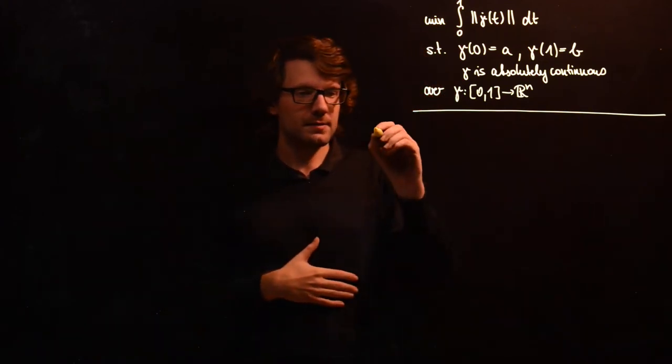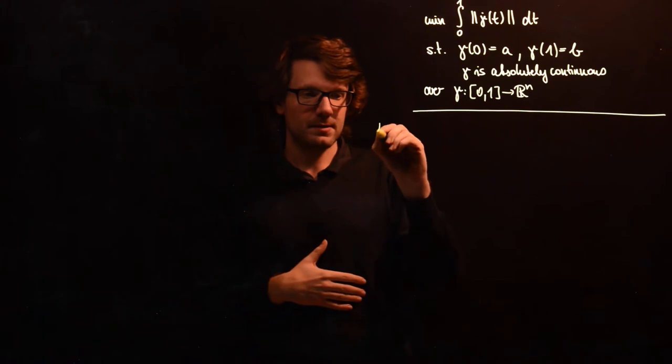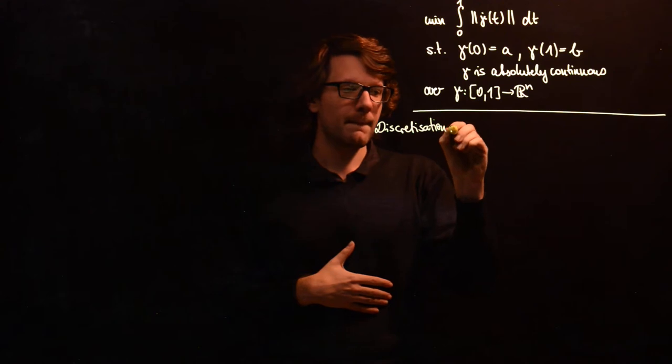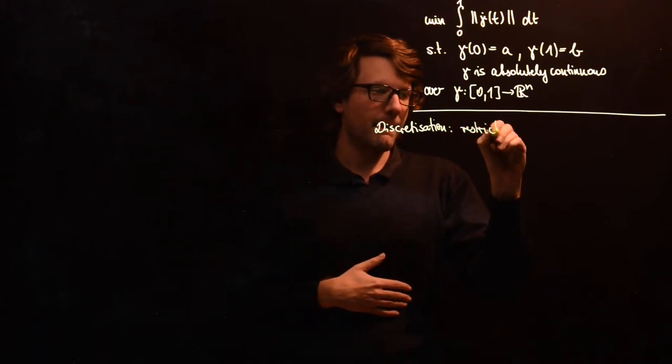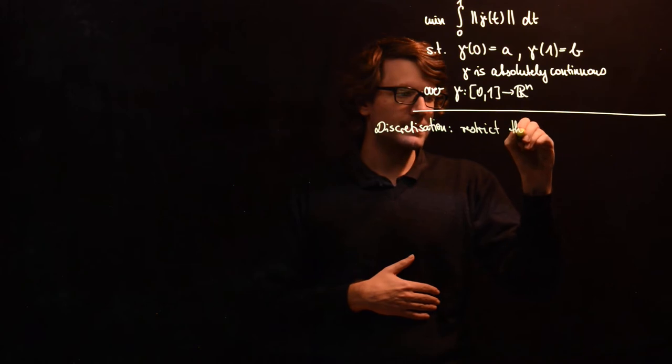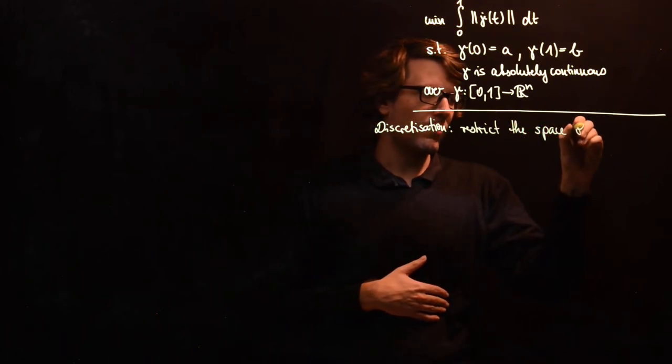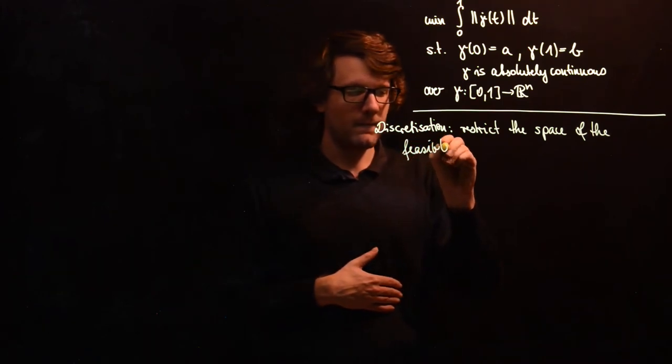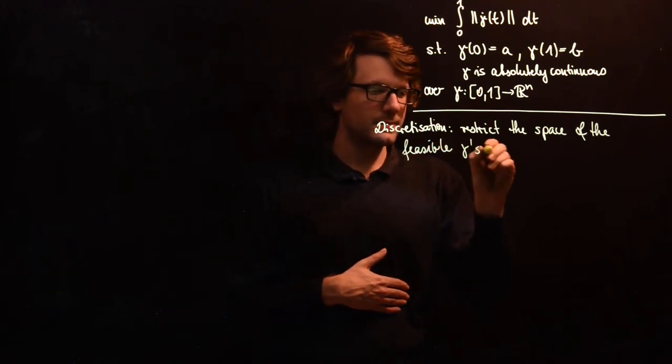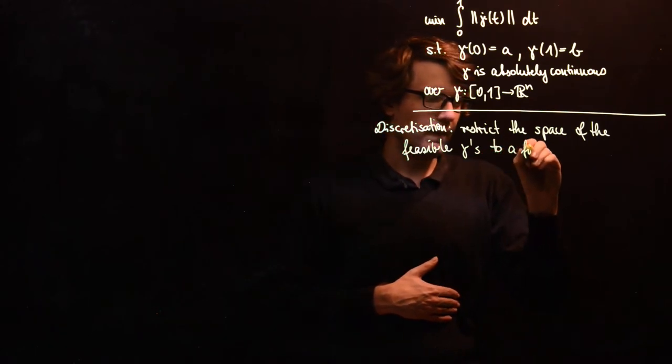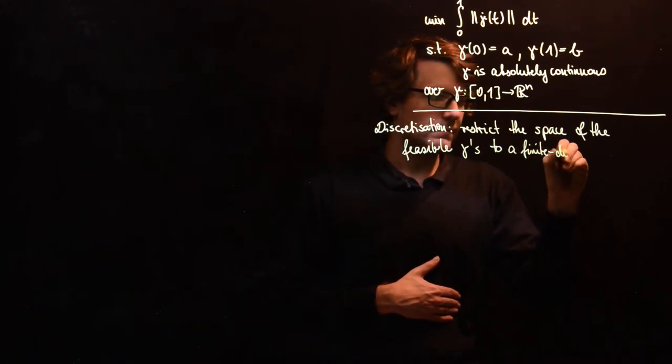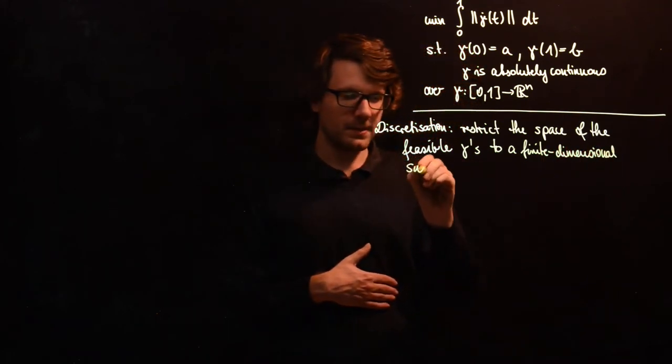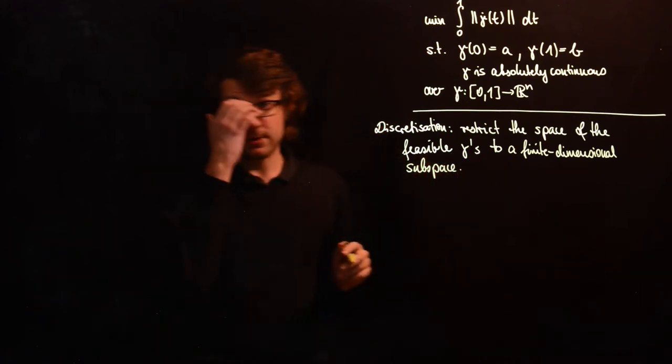So the idea of discretization is to restrict the space of the feasible gammas to a finite dimensional subspace. How do we do that?